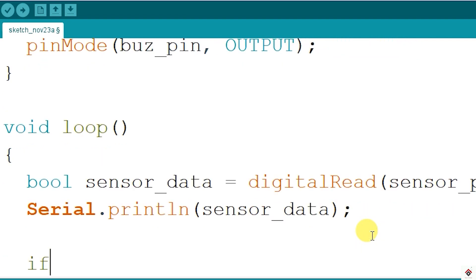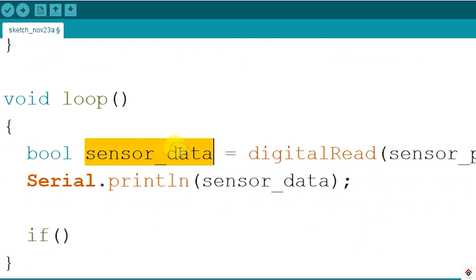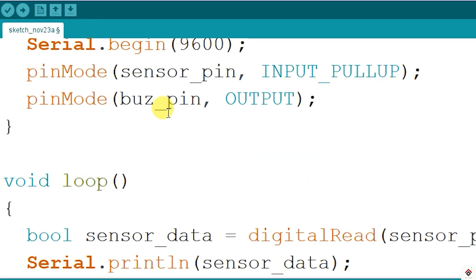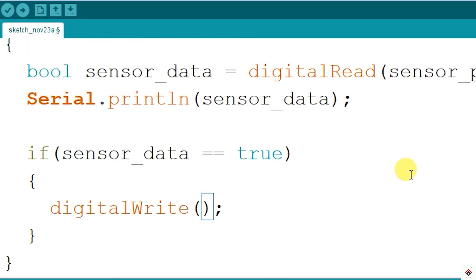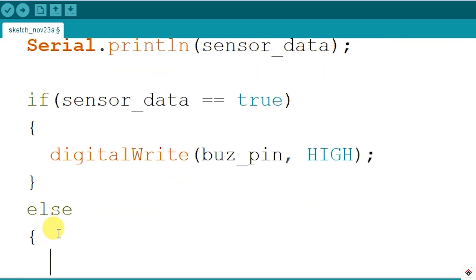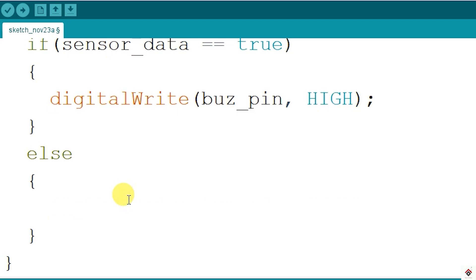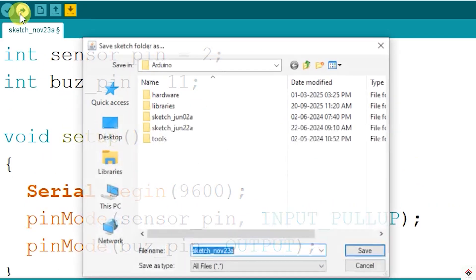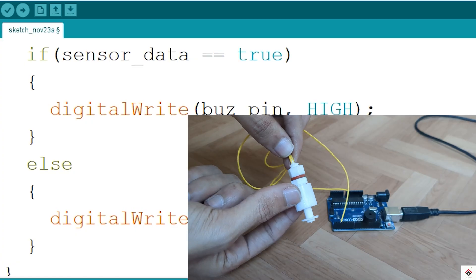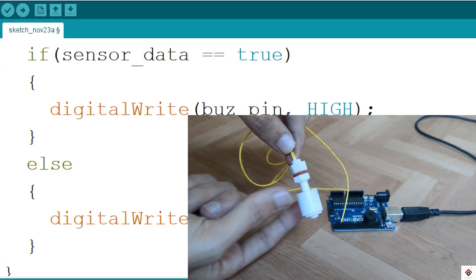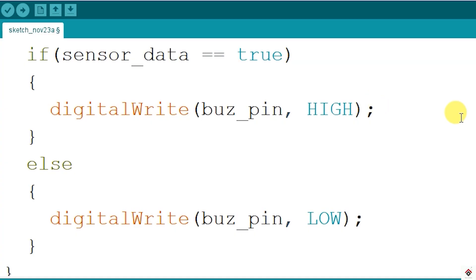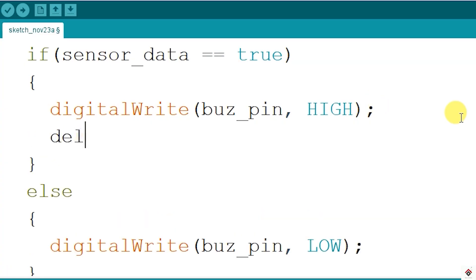I'll add an if-else statement to activate the buzzer when sensor_data is high, or you can compare with true. Use digitalWrite and make the buzzer pin HIGH. In the rest of the cases, the buzzer pin will be LOW. So that's it. I'll upload the code again and see the results.